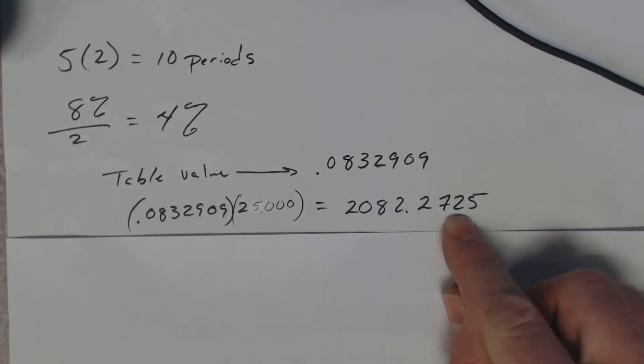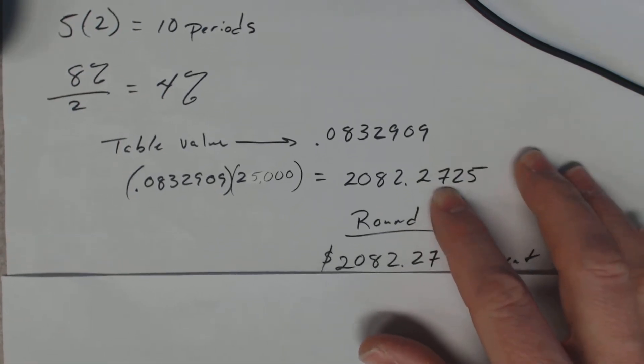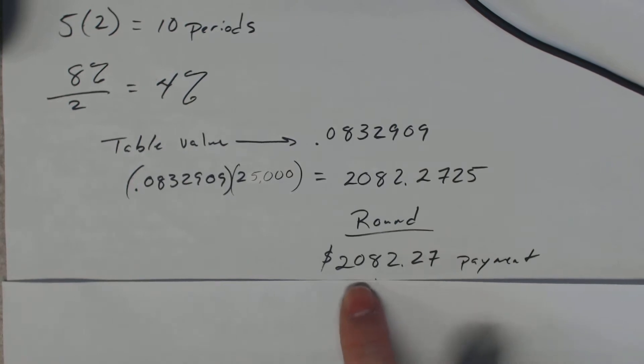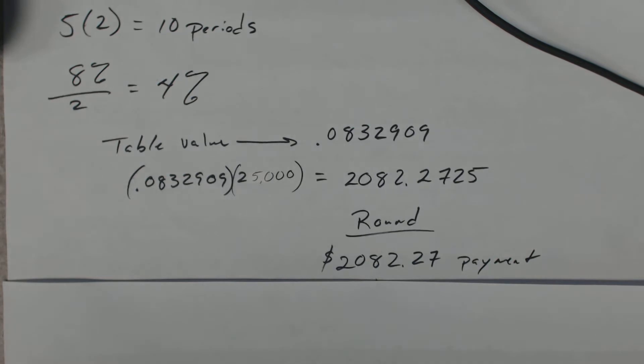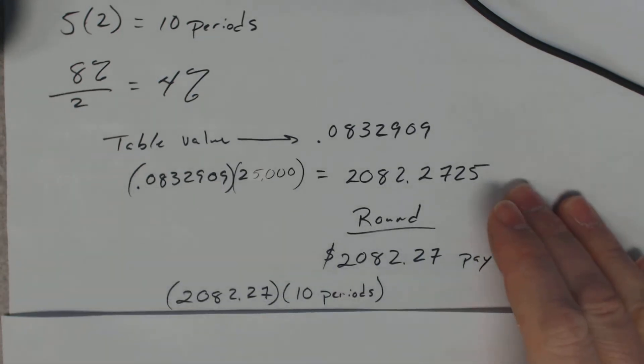So we look at the 2. So this is going to stay a 7. So when we round, we're going to need a $2,082.27 payment he makes semi-annually for the next 10 years. If he makes those payments,